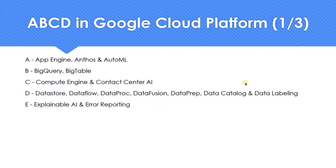Moving on to E. Under Operations — previously called Stackdriver — there's a specific product called Error Reporting, which gives you an aggregated overview of all the errors. That's a handy product. There's also a new feature in AI called Explainable AI — an awesome feature. Not everybody would have explored Explainable AI, but everybody would have seen how Error Reporting works.